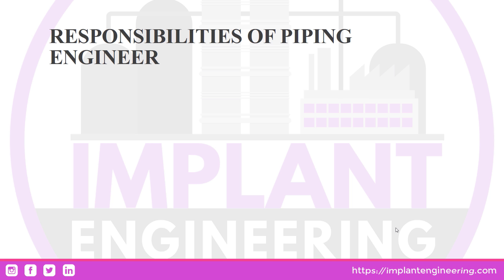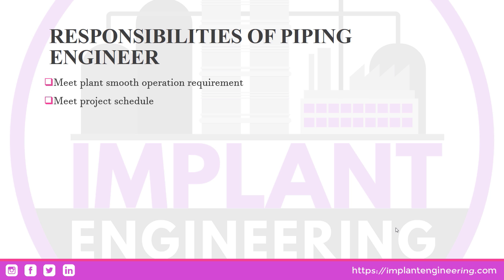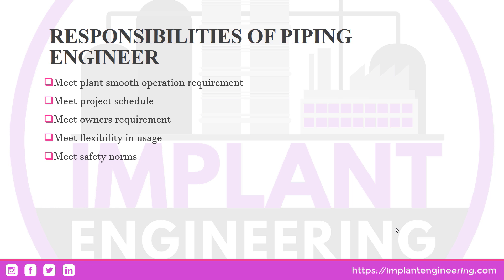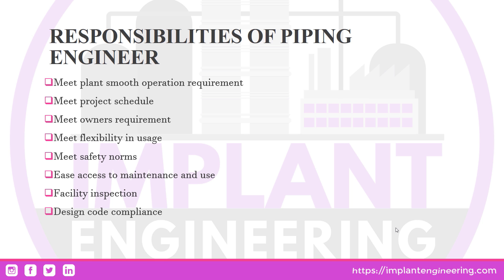Now let's move on to some of the responsibilities of a piping engineer. A piping engineer has many great responsibilities. These include: meeting the plant's smooth operation requirement, meeting the project's specified time schedule, fulfilling the owner's requirements, meeting flexibility in usage, meeting every safety norm needed for smooth plant operation and for the workers involved, ease of access to maintenance, facility of inspection, design code compliance, construction feasibility, and cost efficiency.